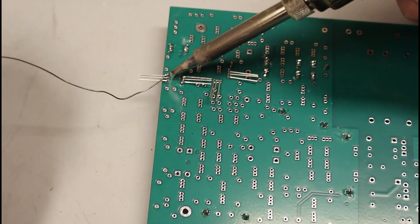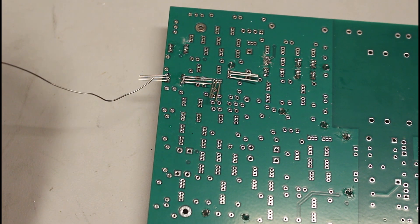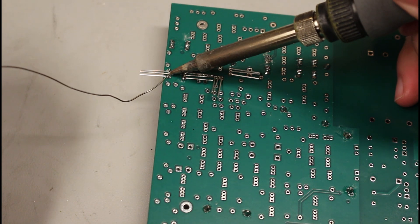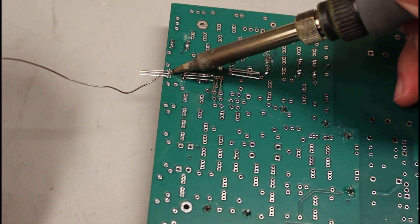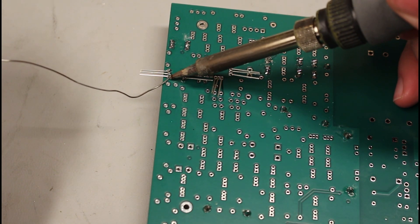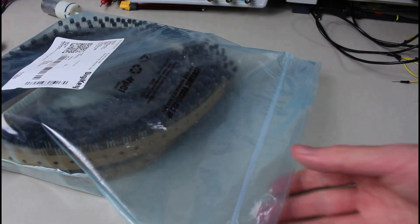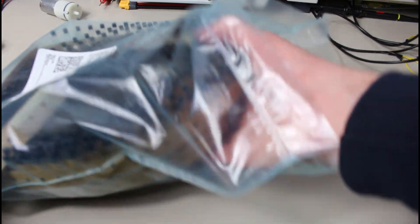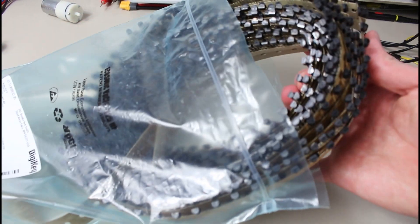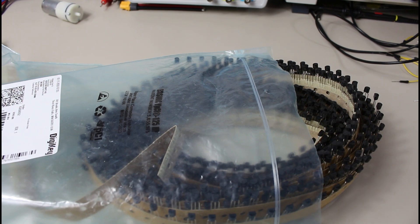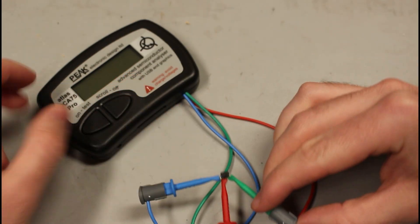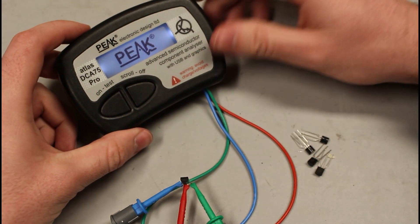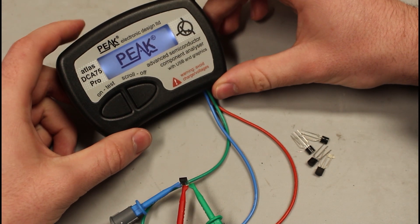I also used through-hole components. I did this for two reasons. First, it's a lot easier to match the transistors when the leads are long like this. Second, and more importantly, I have several hundred of these transistors, and I kind of need to use them. If you plan on replicating this project at home, I really recommend that you use surface mount components and use matched pair IC transistors so you don't have to match them manually yourself. It'll make everything much easier.